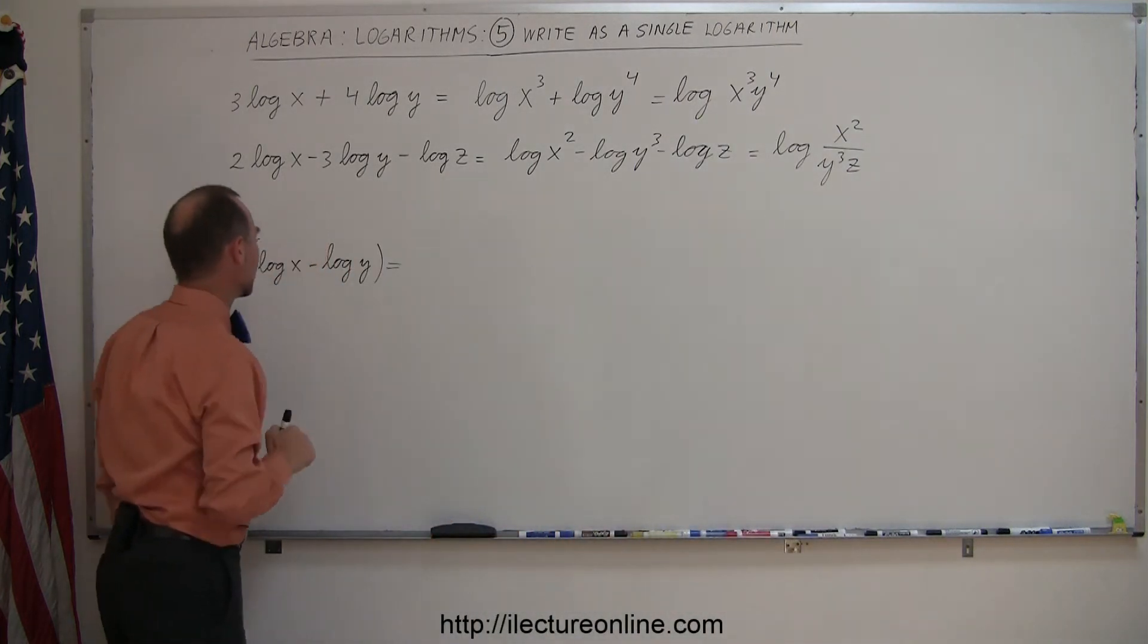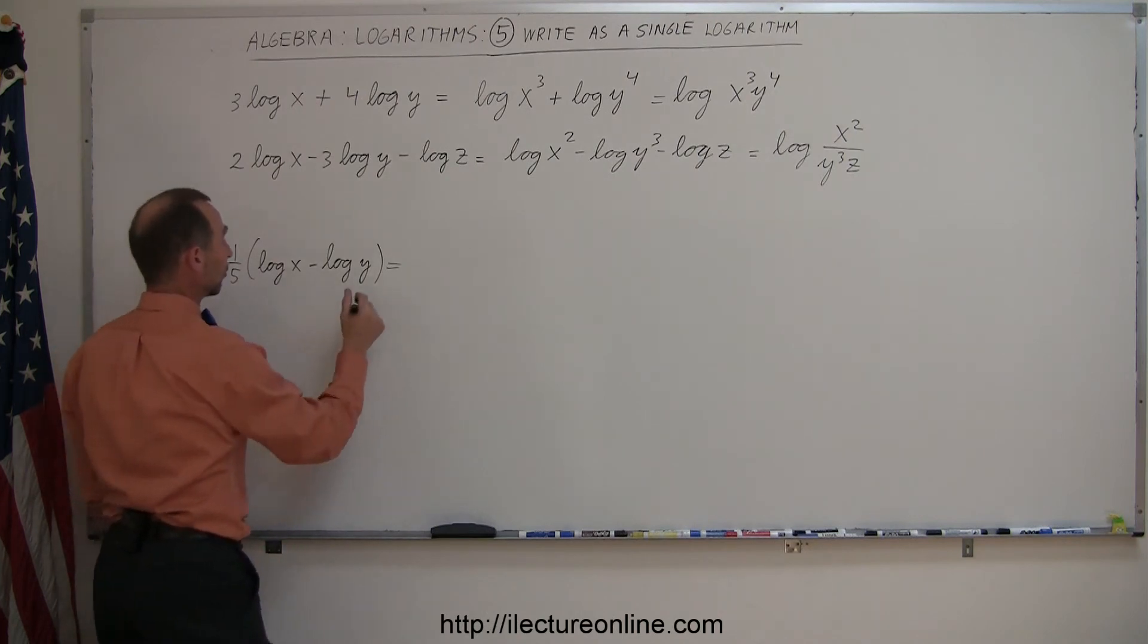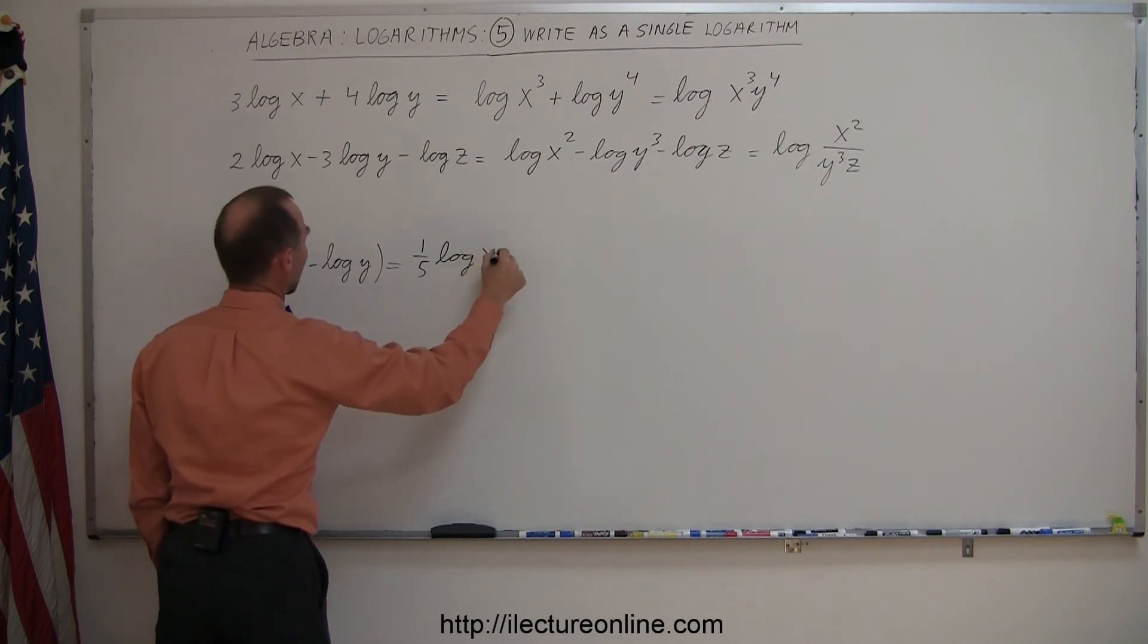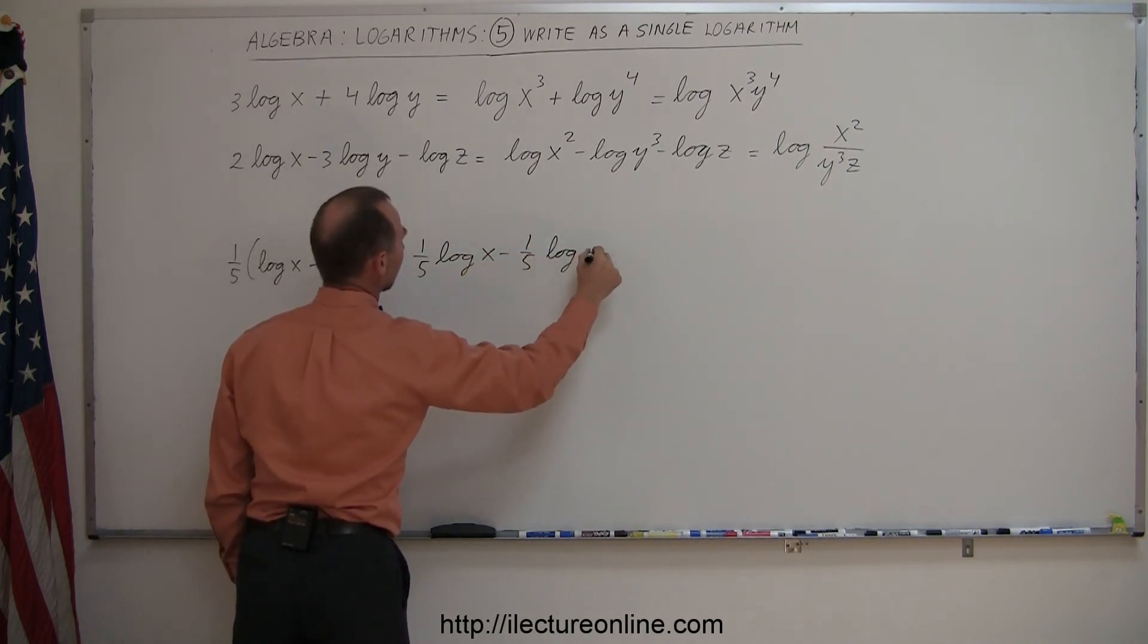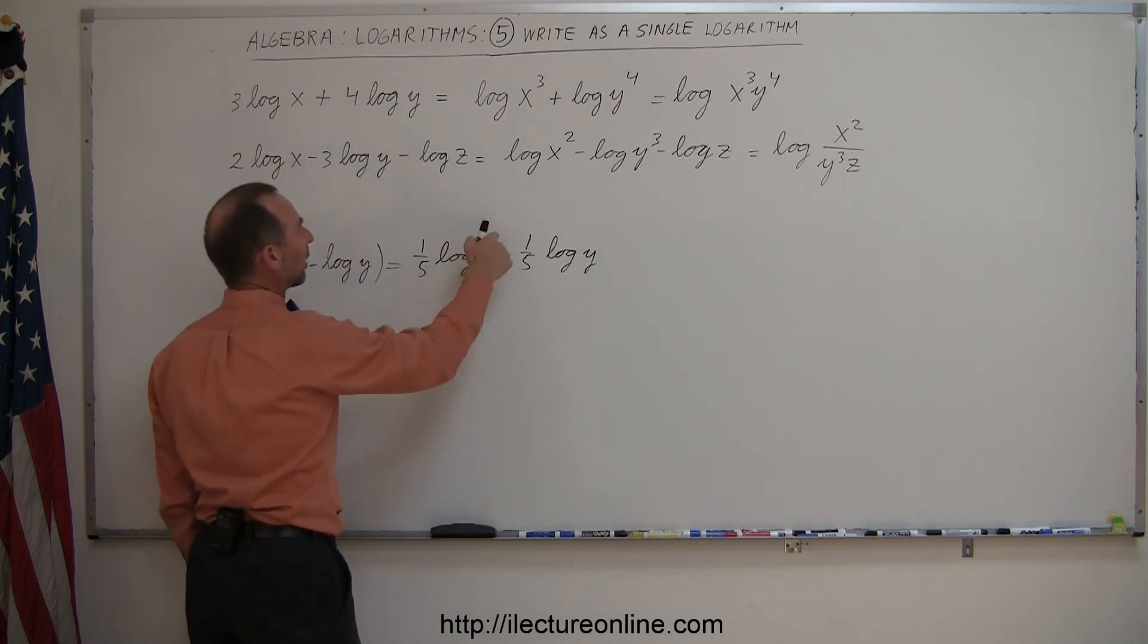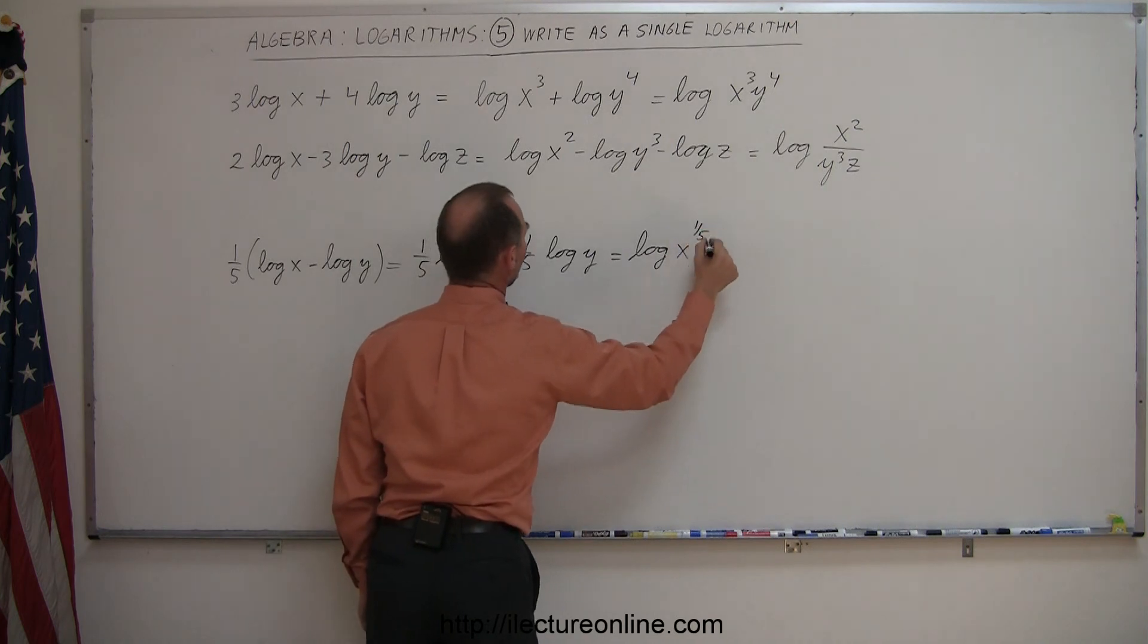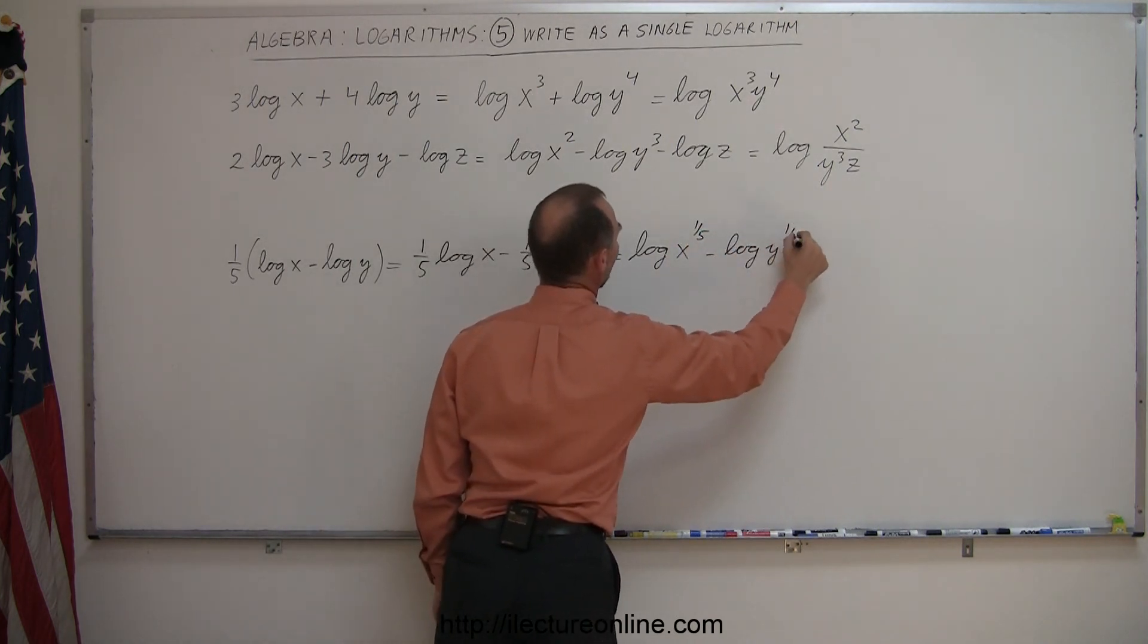Finally here we have 1/5 times this quantity, so the first thing we're going to do is multiply this through. So we have 1/5 times the log of x minus 1/5 times the log of y. Now we can write that as an exponent, so this becomes the log of x to the 1/5 power minus the log of y to the 1/5 power.